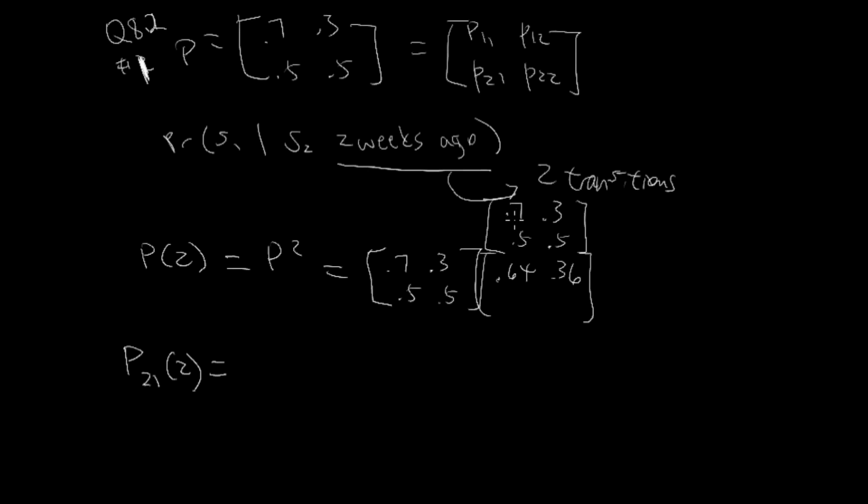Here we have 0.35 plus 0.25, this is 0.6, and this is 0.4. So p2,1 of two, here we have p2. p2,1 is this number here, so 0.6 is p2,1 of two, and that's our answer.